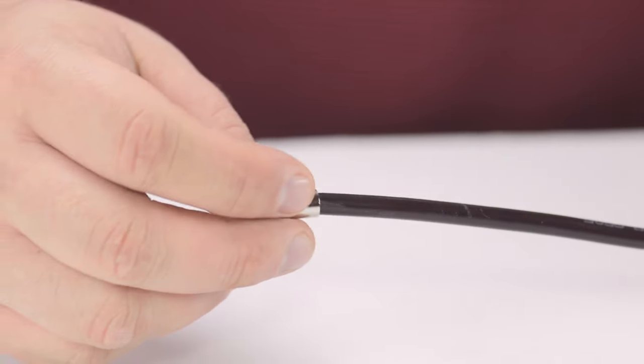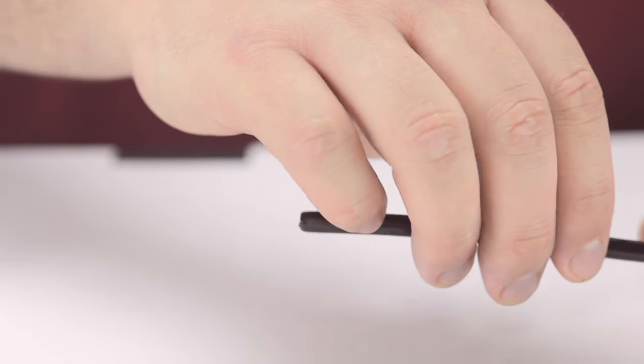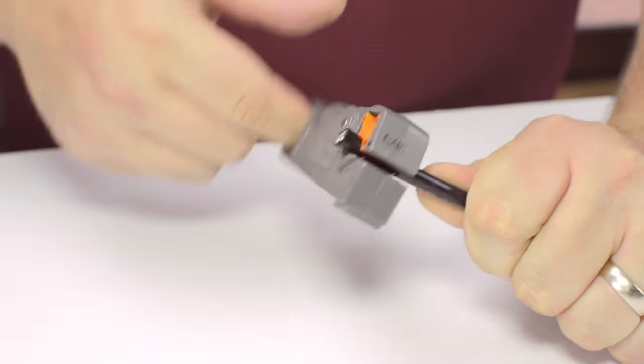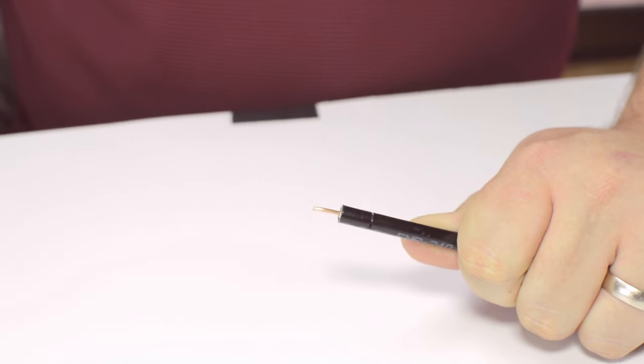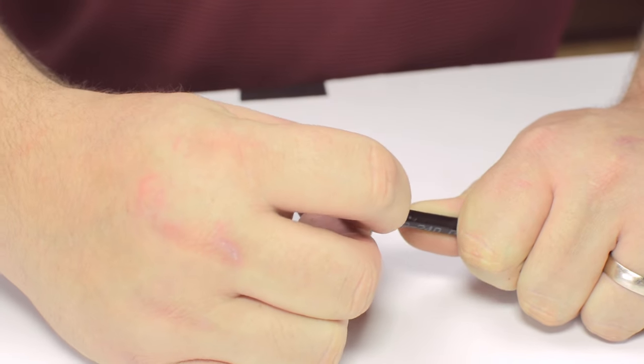Start by inserting the ferrule over the outer jacket of the cable. Then using your cable stripper, strip back the outer jacket and dielectric. The advantage of using a cable stripper is that it will strip back the jacket and dielectric at the same time.